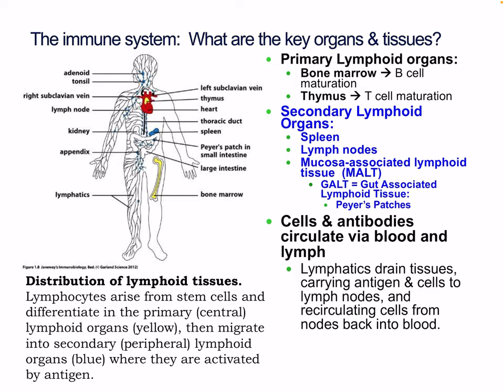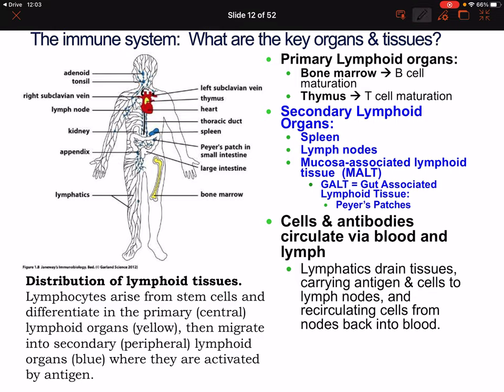Cells and antibodies circulate via the blood and lymph. The lymphatics — here you can see the lymph nodes — drain tissues, carrying antigens and cells to lymph nodes and recirculating cells back into the blood, functioning similarly to the circulatory system. Lymphocytes arise from stem cells and differentiate in primary (central) lymphoid organs, then migrate into secondary peripheral lymphoid organs where they are activated.